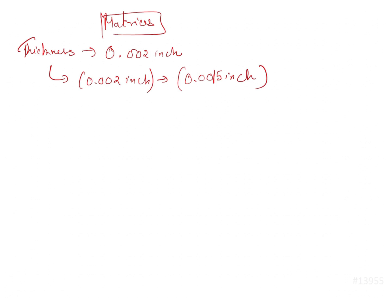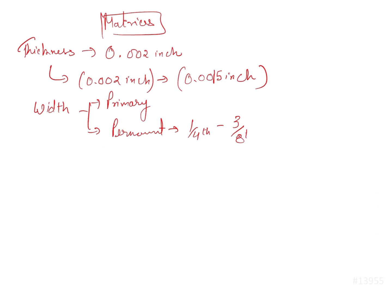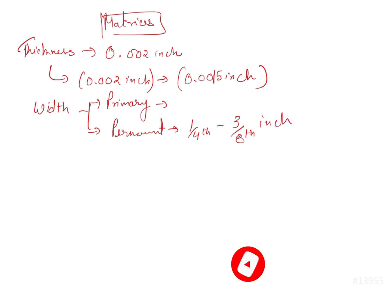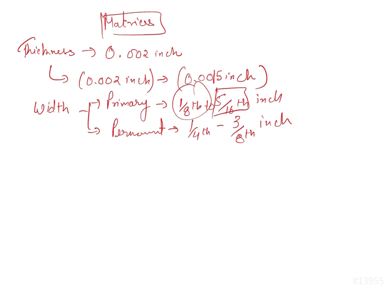If we talk about the width of the matrix band, it has to be different for primary and permanent teeth. In permanent teeth, width may range from one-fourth of an inch to three-eighths of an inch. In primary teeth, it is anywhere from one-eighth of an inch to five-sixteenth of an inch. These are the dimensions which can be asked in the exam.